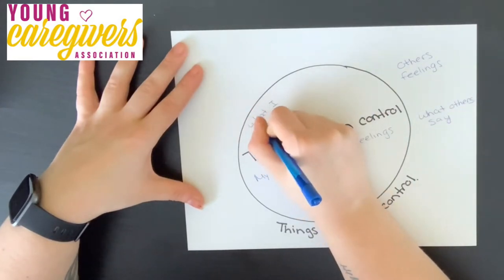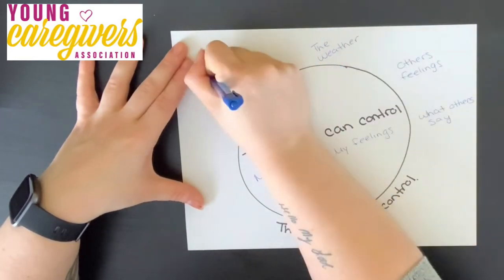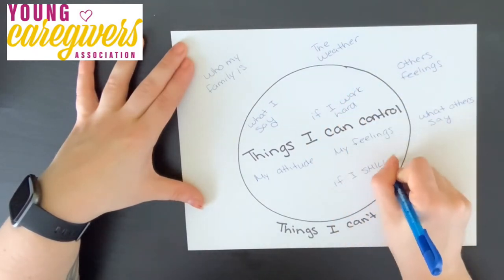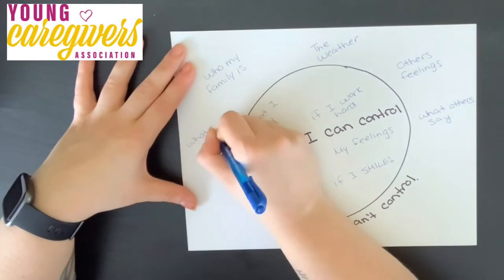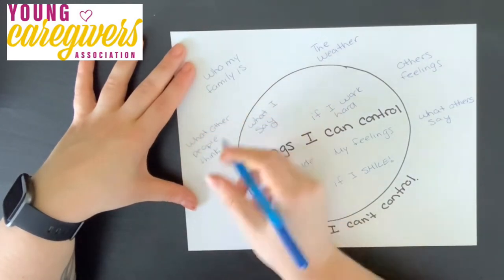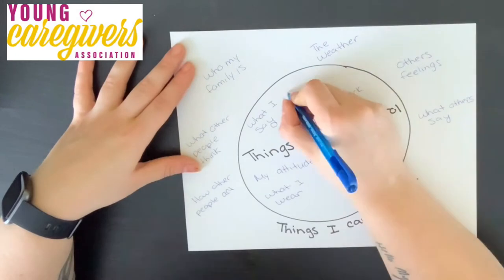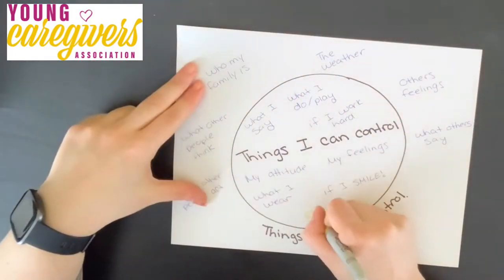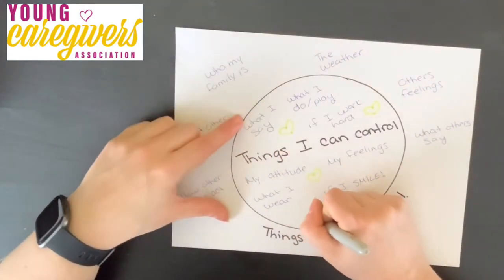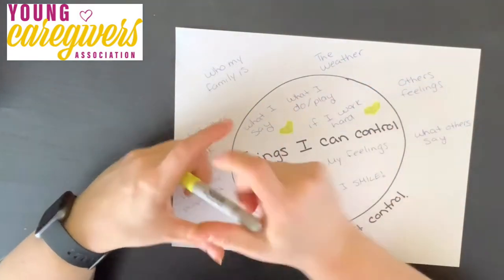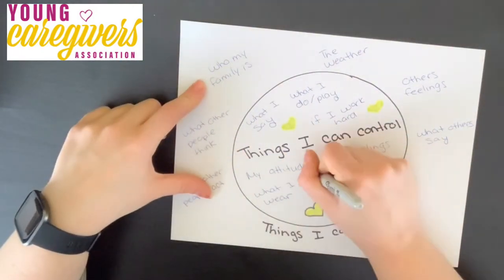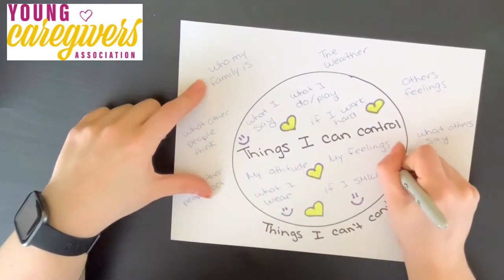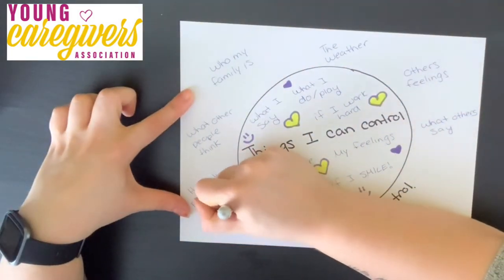You don't have to write in any specific order, and try to think about how these things are applicable to your life. For example, for young caregivers, there might be some things that happen in your life that you can't control that might be a bit different than your friends, whereas there are some things that everybody can't control, like the weather. Then you can take some other colors and decorate around in the extra spaces — drawing hearts in different colors, maybe some smiley faces, and really just making it your own.